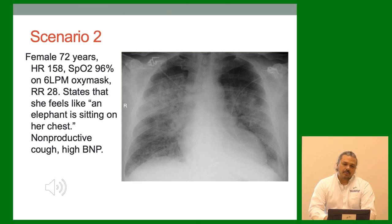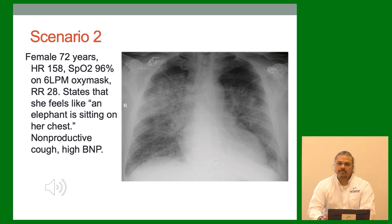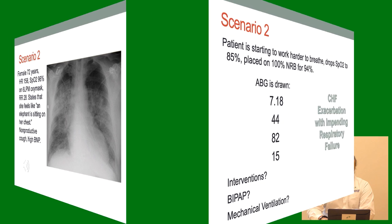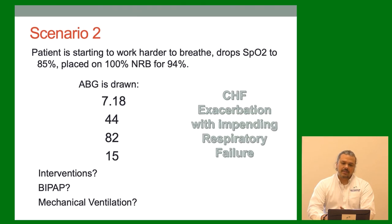Next scenario: Female, 72, heart rate 158, SAT 96% on 6-liter oxymask, respiratory rate 28. Says she feels like an elephant is sitting on her chest. Non-productive cough, elevated BNP. Thinking CHF, right? X-ray is fluffy, breath sounds are wet. Patient is starting to work harder to breathe. Sat dropped to 85%, placed on 100% non-rebreather for 94%. ABG drawn: 7.18 / 44 / 82 / 15.